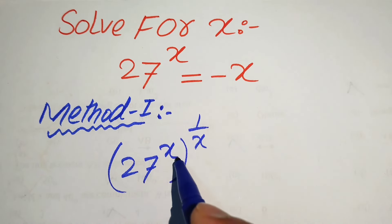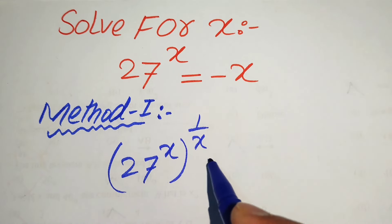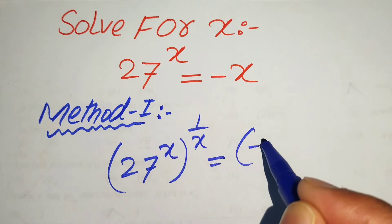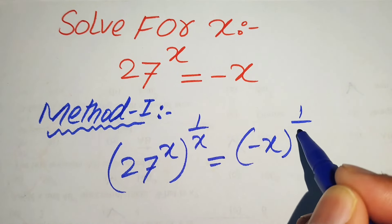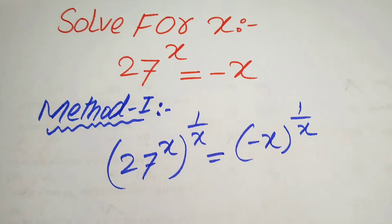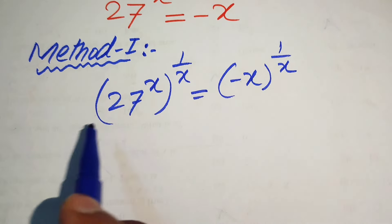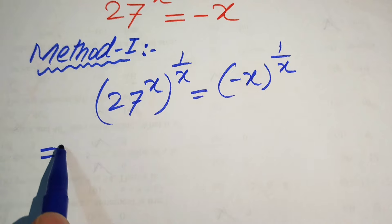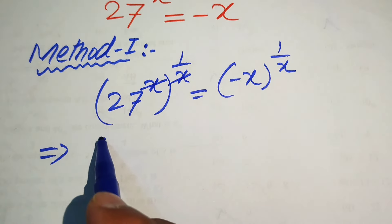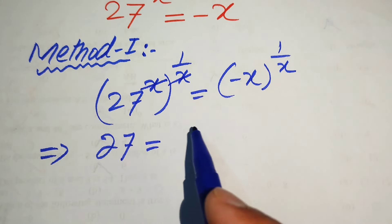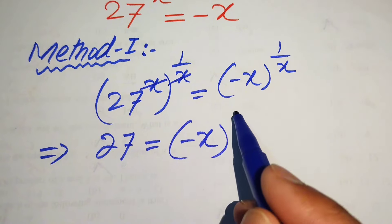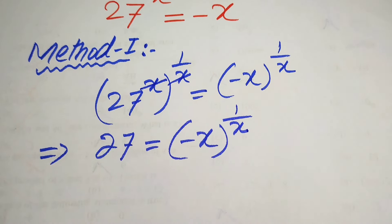We write it as 27 to the power of x times 1 over x equals minus x, whole to the power of 1 over x. In the next step, the x cancels out and we get 27 equals minus x to the power of 1 over x.